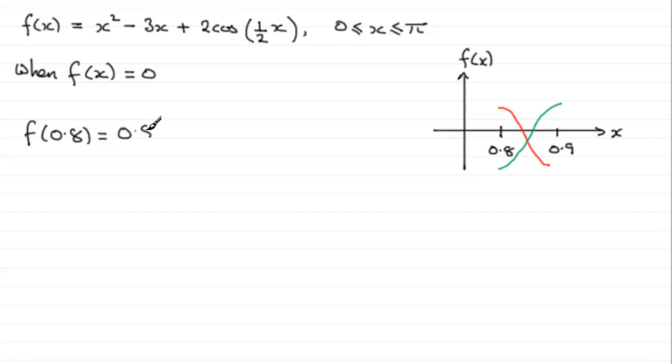We just need to put 0.8 through here, so we're going to have 0.8² - 3(0.8) + 2cos(0.8/2). Make sure your calculator's in radians mode because you're dealing with a trigonometric function here and your angle is in radians.